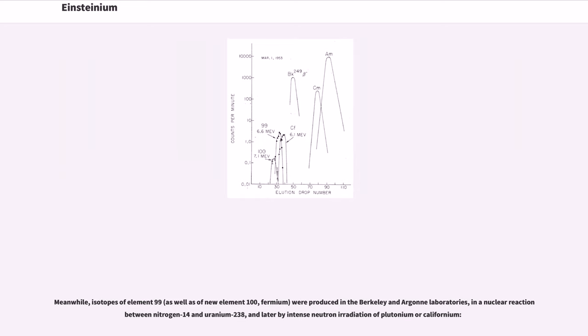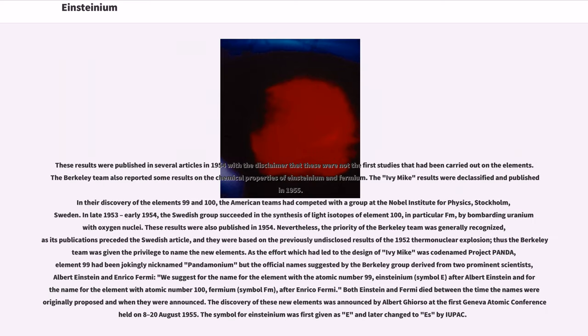Meanwhile, isotopes of element 99, as well as of new element 100, fermium, were produced in the Berkeley and Argonne laboratories, in a nuclear reaction between nitrogen-14 and uranium-238, and later by intense neutron irradiation of plutonium or californium. These results were published in several articles in 1954 with a disclaimer that these were not the first studies that had been carried out on the elements. The Berkeley team also reported some results on the chemical properties of Einsteinium and fermium.